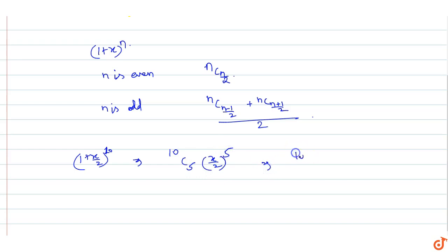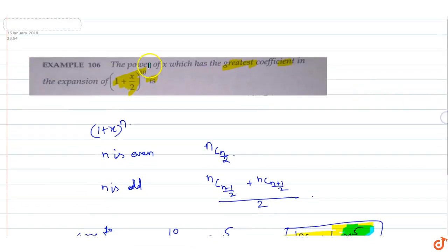This equals 10C5 times (1/2) raised to power 5 times x raised to power 5. So the power of x with the greatest coefficient is x raised to power 5.